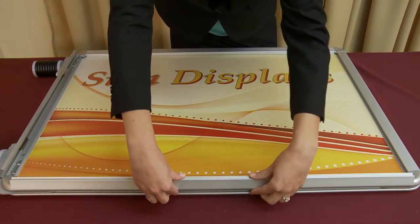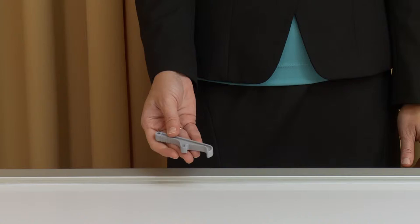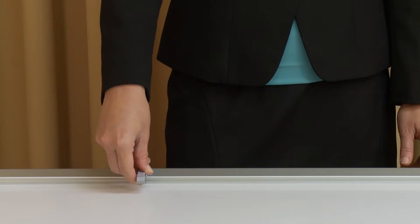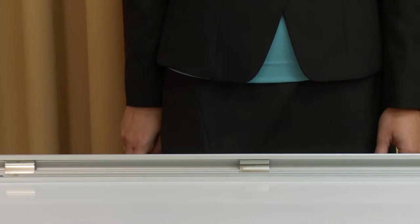Once both graphics are secured in place, you are now ready to attach the base to the display. The poster flex snap frame comes with a snap edge tool to assist with the opening and closing of the hidden snap edges.